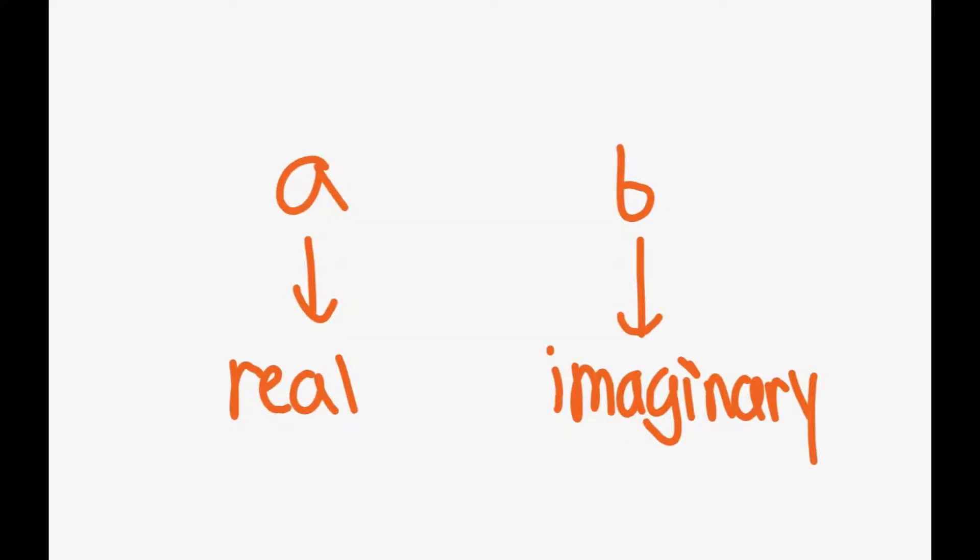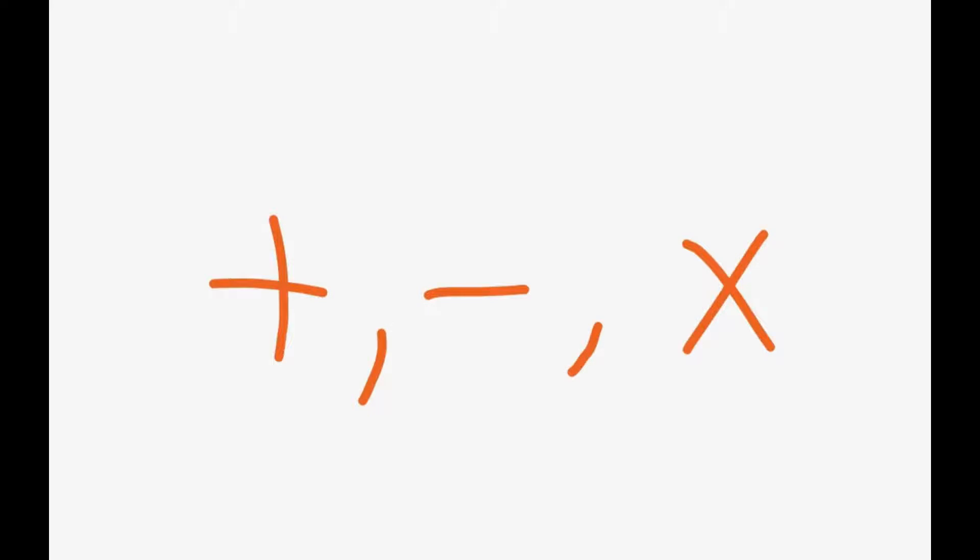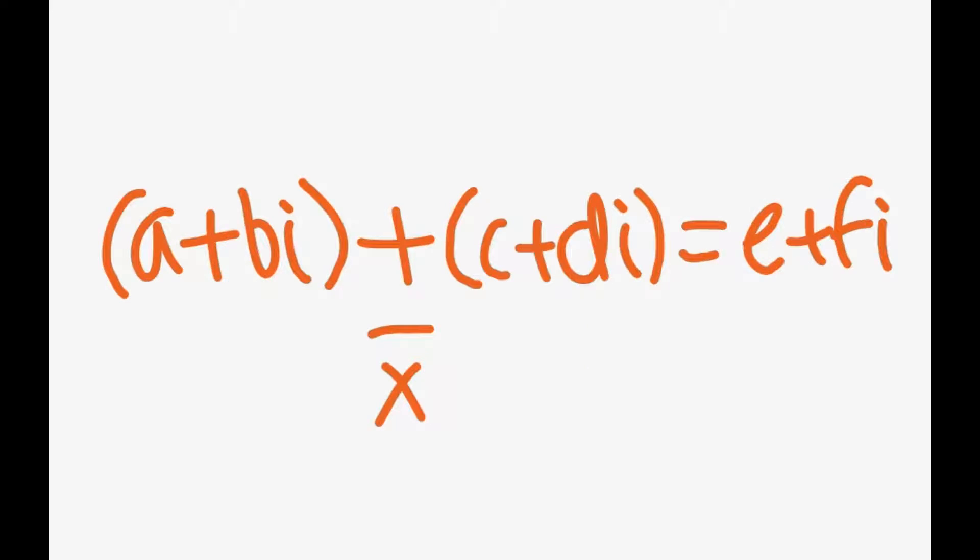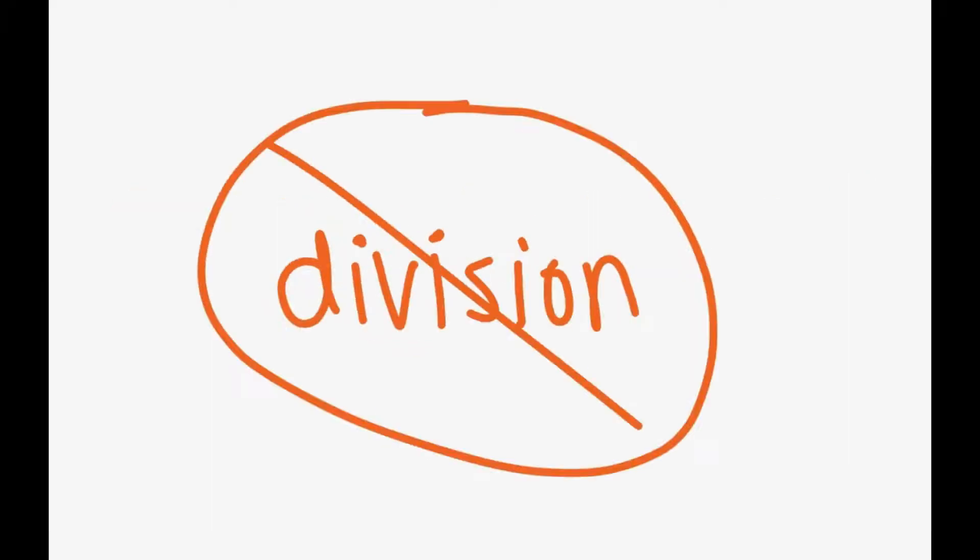The Gaussian integers are closed under addition, subtraction, and multiplication. This means that after doing any of these processes with two Gaussian integers, the end result is still a Gaussian integer. However, division does not always result in a Gaussian integer. We can see this with a simple example.